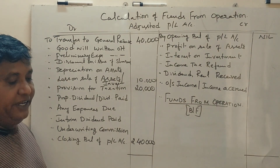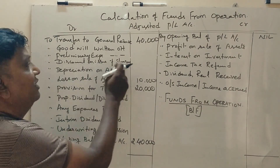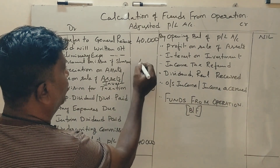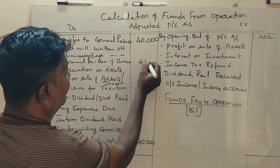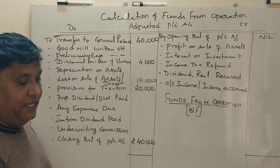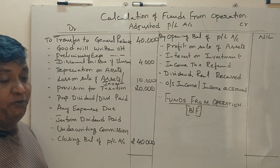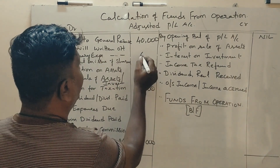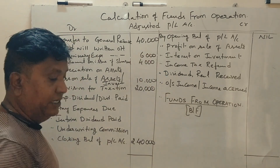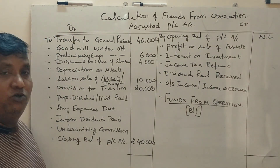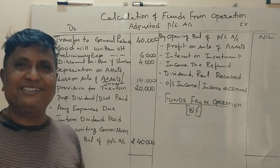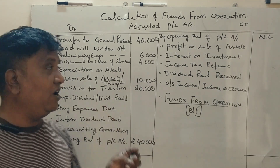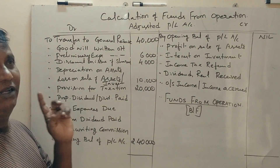Next, discount on issue of shares and debentures — 4,000 rupees. Next, preliminary expenses written off — 6,000 rupees. Next, selling expenses, it's a business expense — debit side 10,000.